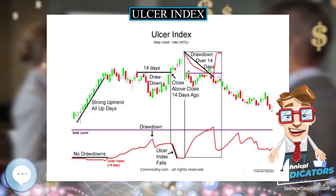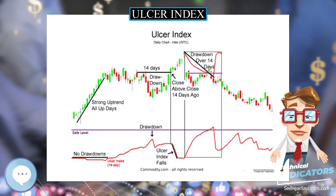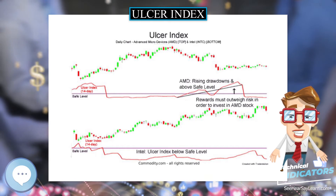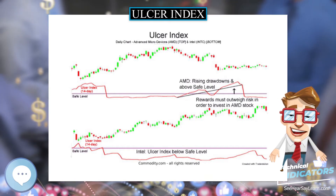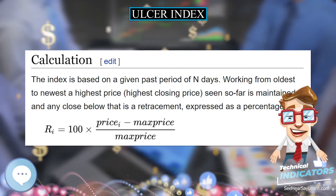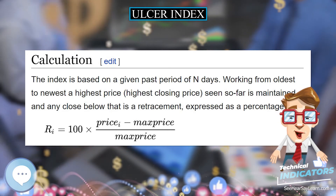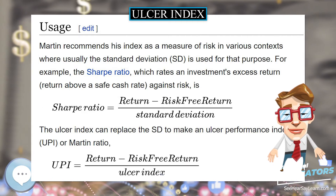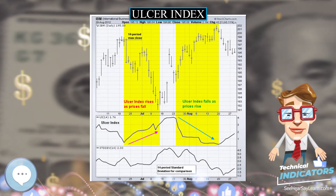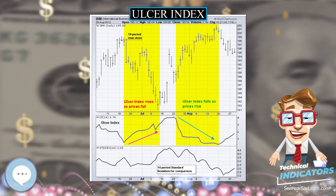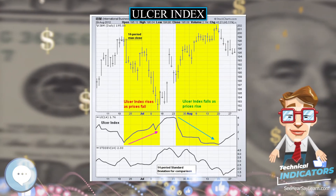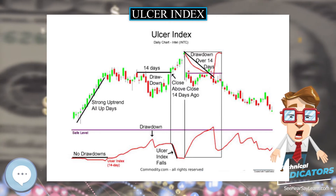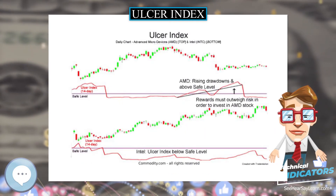The quadratic mean or root mean square of these values is taken, similar to a standard deviation calculation. The squares mean it does not matter if the R values are expressed as positives or negatives — both come out as a positive Ulcer Index. The calculation is relatively immune to the sampling rate used, giving similar results on weekly prices as on daily prices. Martin advises against sampling less often than weekly, since with quarterly prices a fall and recovery could take place entirely within such a period and not appear in the index.